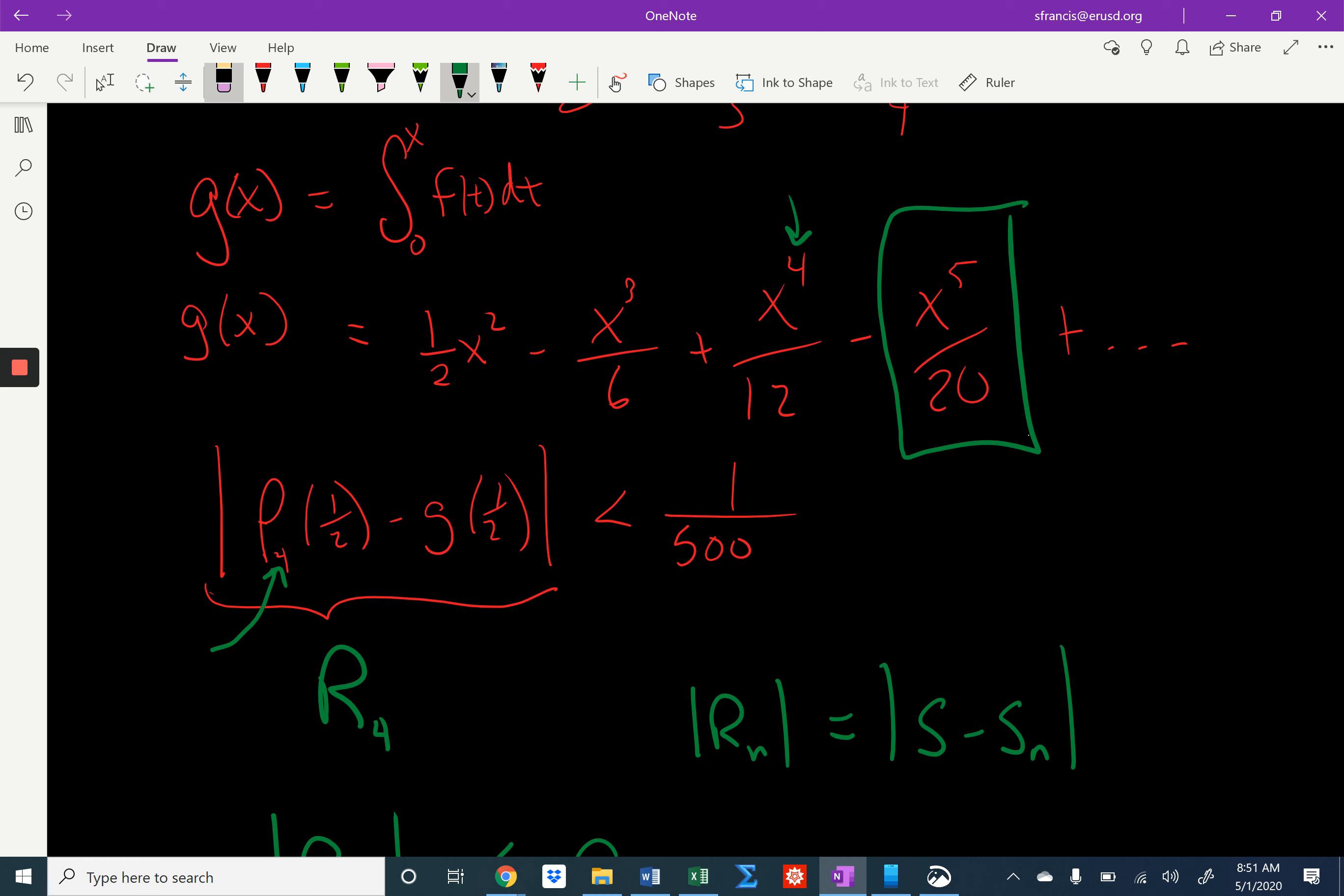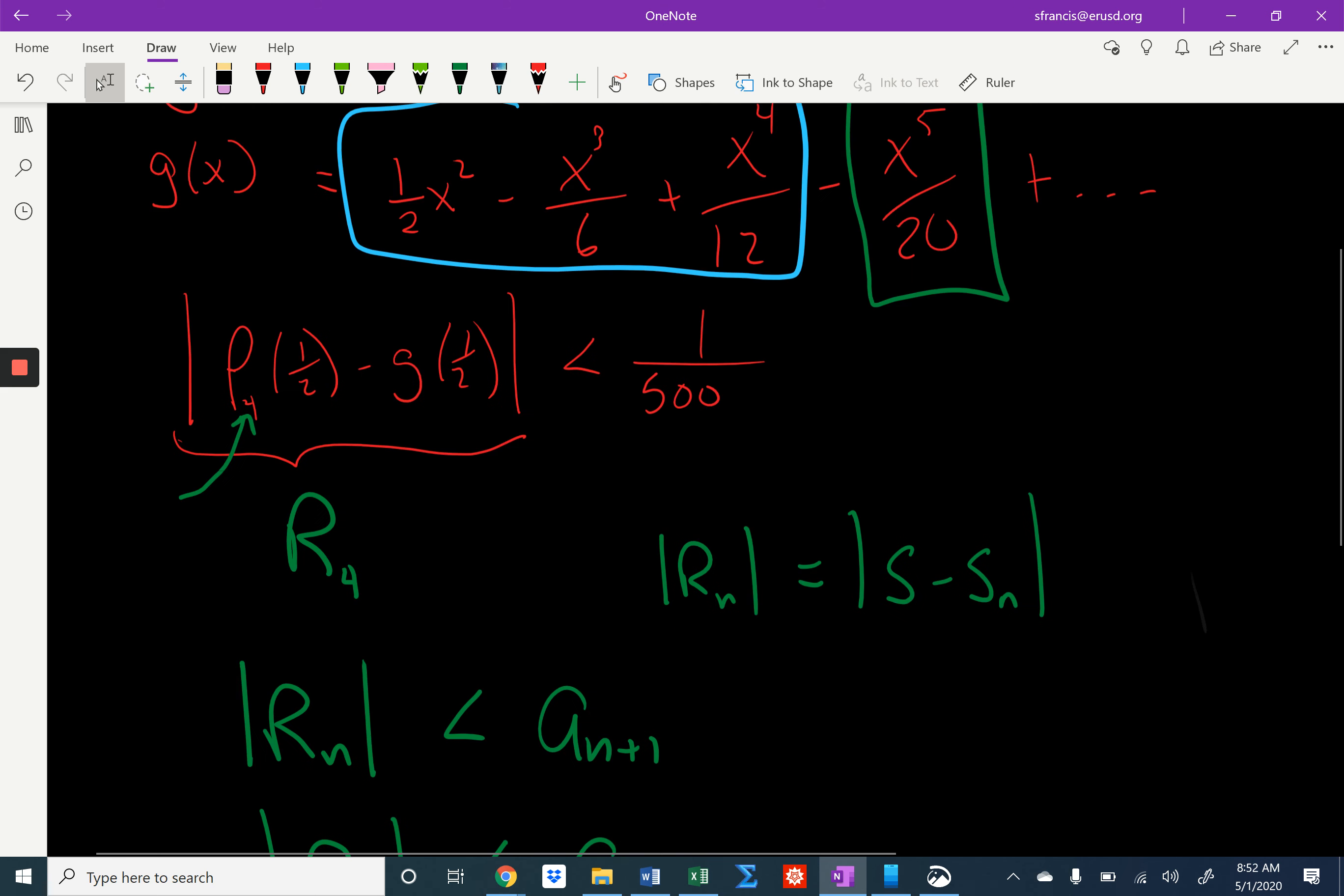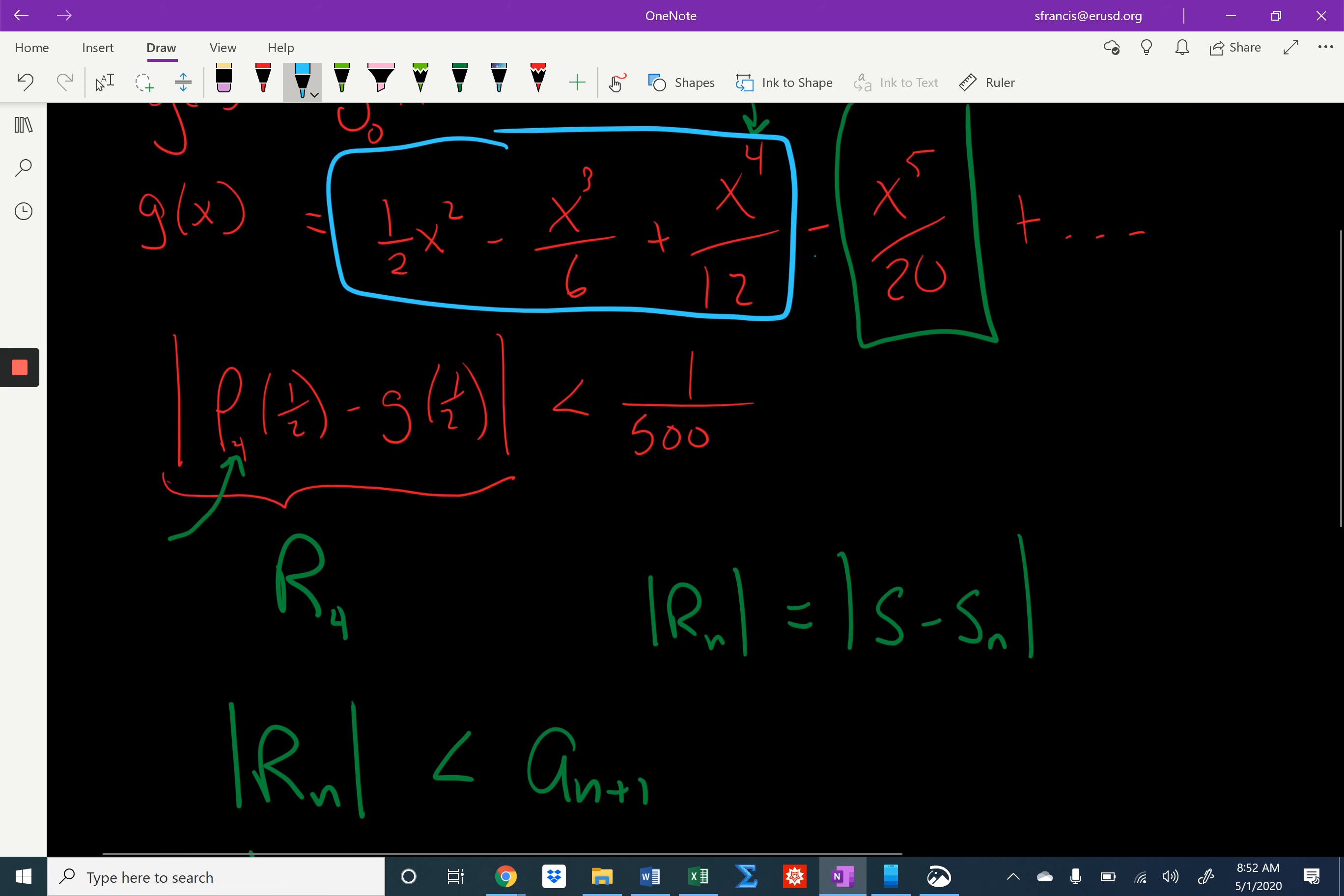So my sum only goes up to these terms here for p sub 4, okay? Because it only goes up to the fourth degree. So the fifth degree term is the first one that's left off. That's the term that bounds our nth partial sum down here, okay? So I just need the magnitude. So it's got a subtraction in front of it. I don't care about that. So x to the fifth over 20.